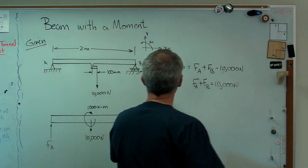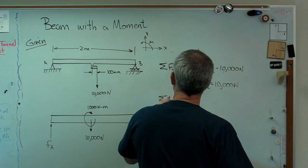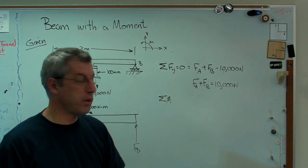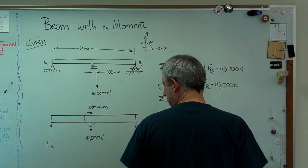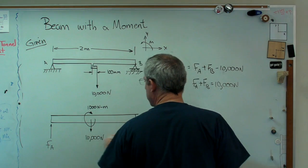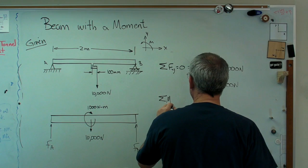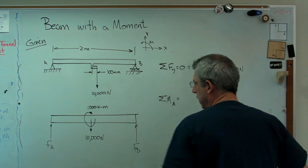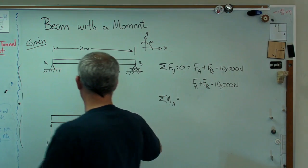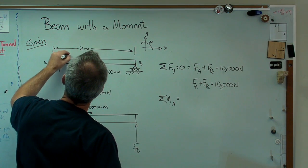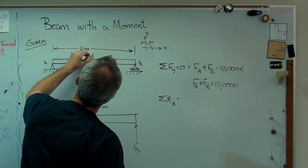The second one is the sum of the moments has to be equal to 0. We can take the moments about any point we want. Let's take the moments about point A right there. We've got that 10,000 newton force at 1 meter. By the way, this is, I guess I need to write that down. That's one meter.